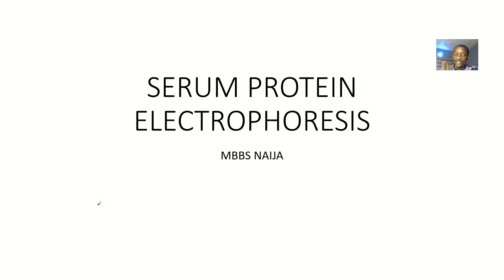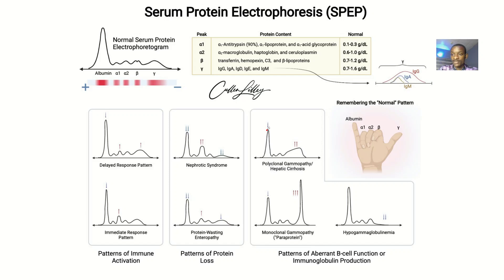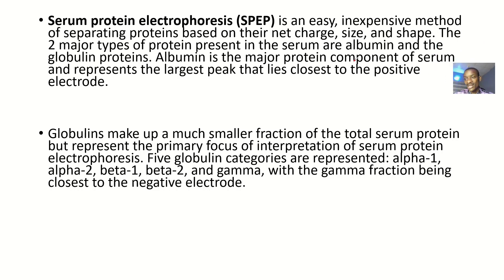Looking at another method that could be done in the laboratory: serum protein electrophoresis. Anytime you see electrophoresis, the first thing that should come to your mind is that you're trying to use electricity to divide a group of things. So if you have a group of proteins and you want to know if this protein is albumin, pre-albumin, or globulin, you put them in an electrophoresis machine to separate them.